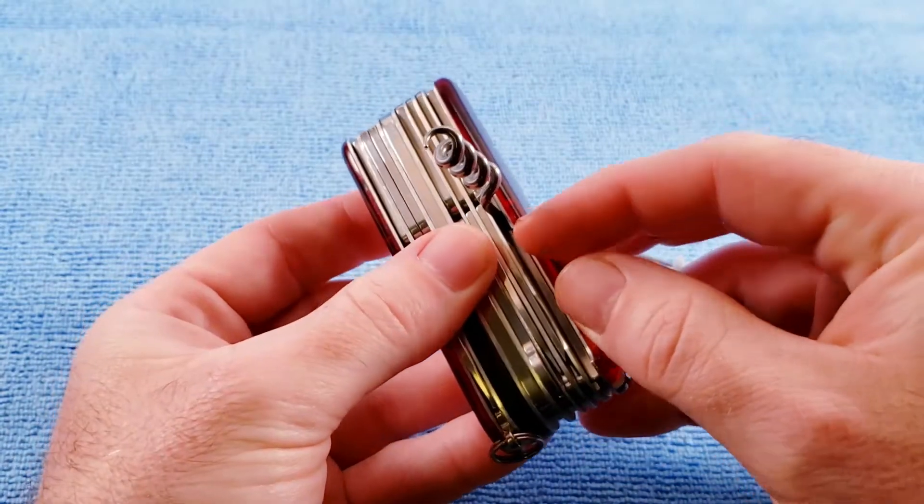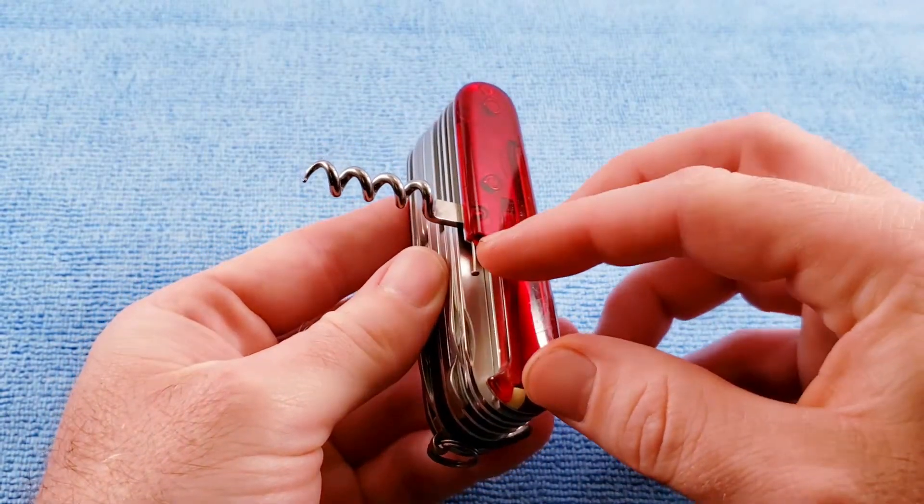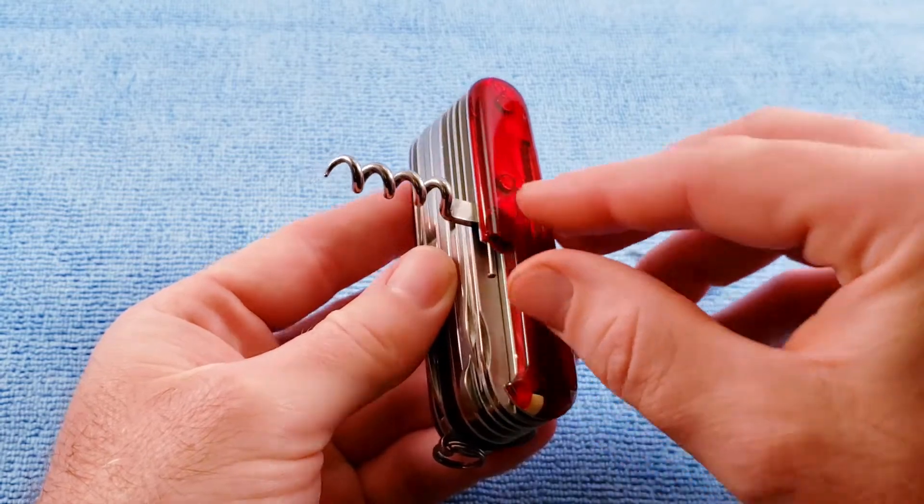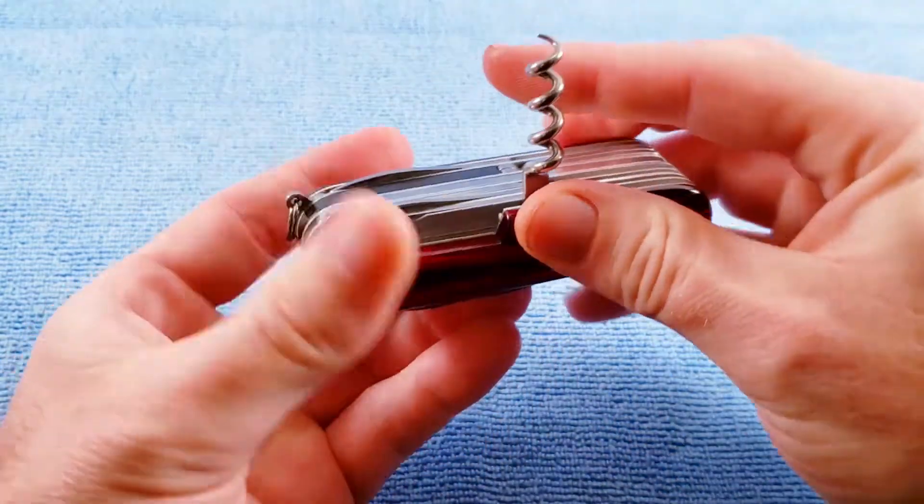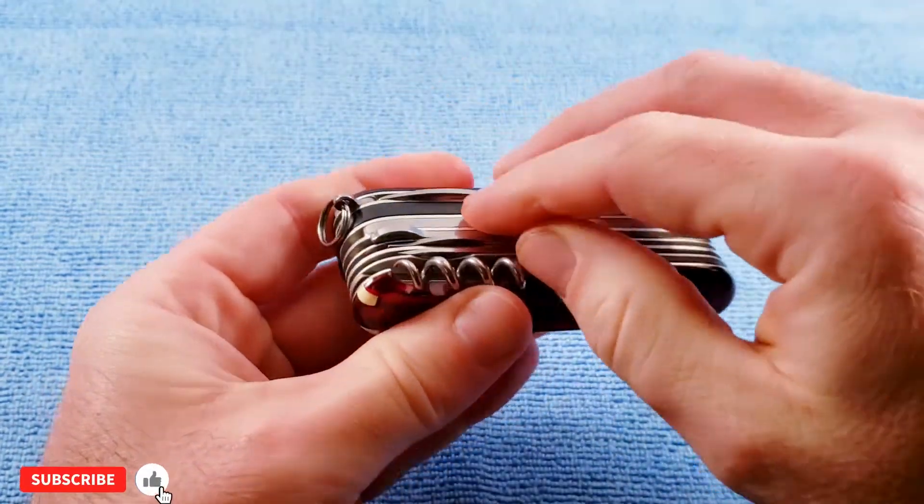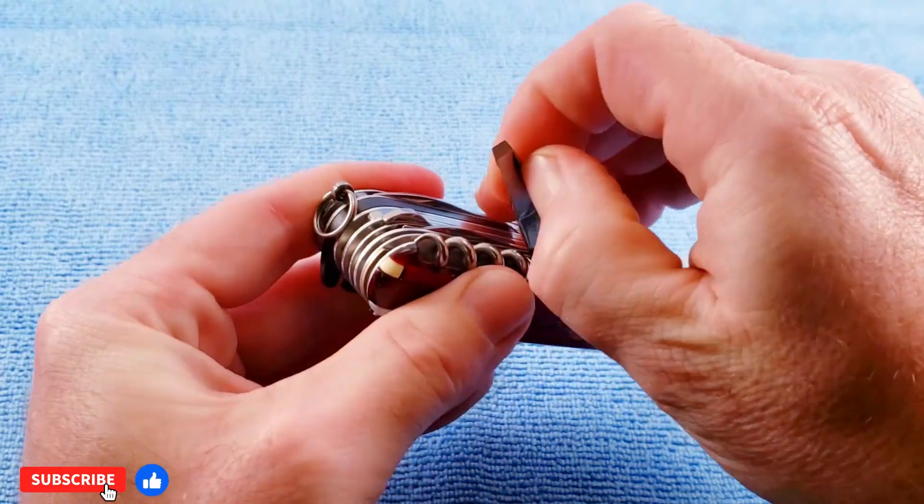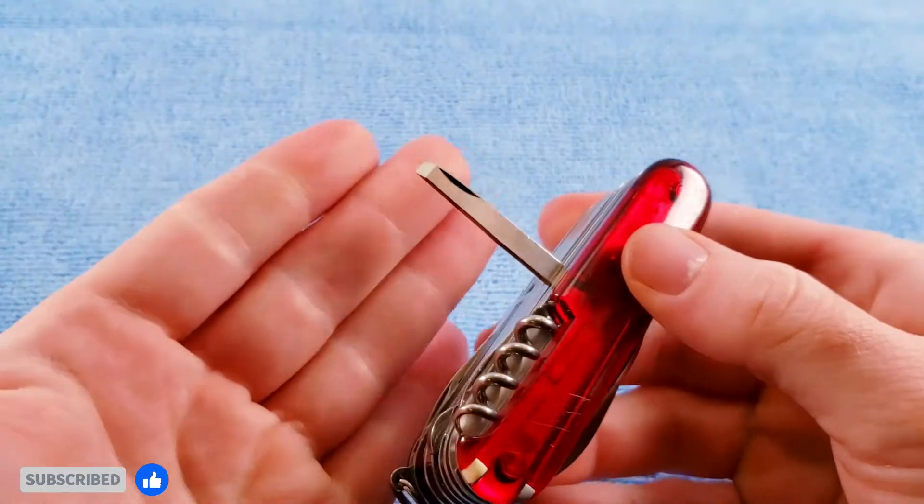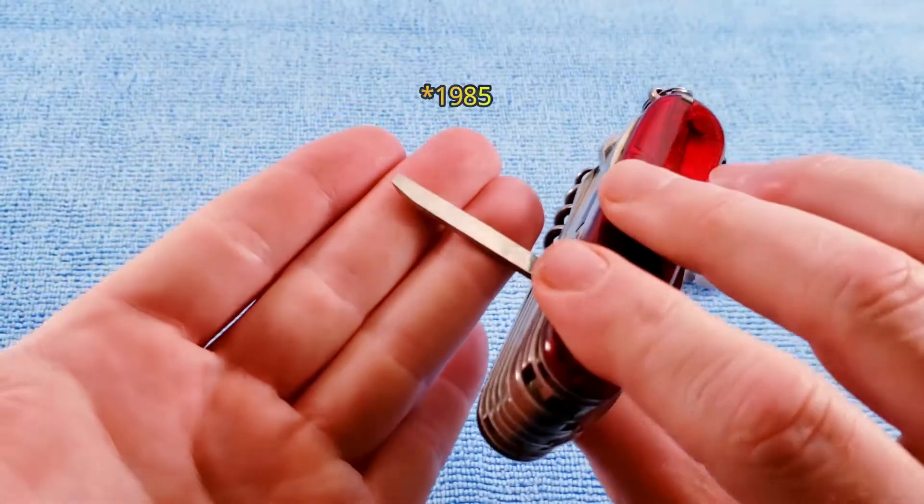We get the 1991 edition of the straight pin in the scale. Both of these are post-1991 features. With the Cybertool Large, we get the back layer chisel that was introduced in 1977.